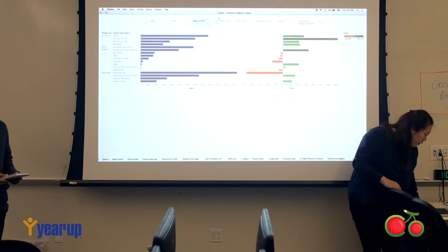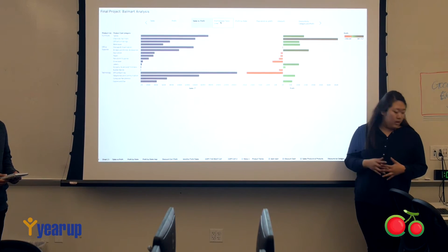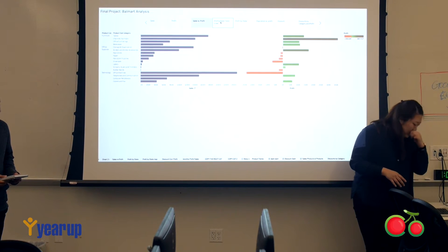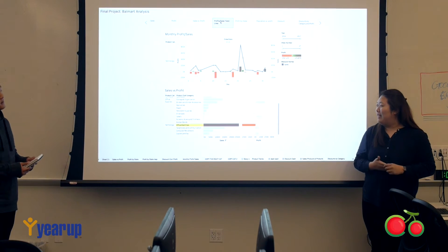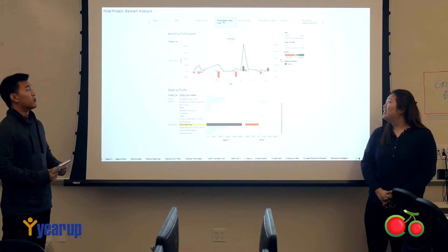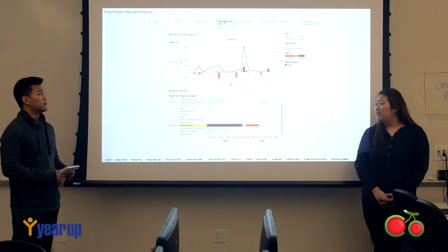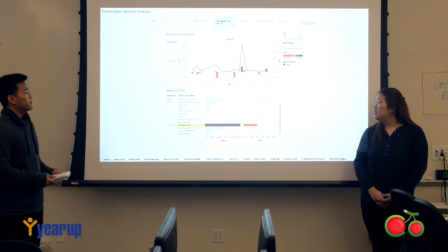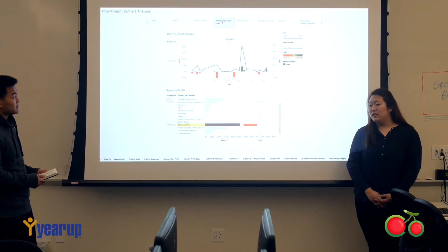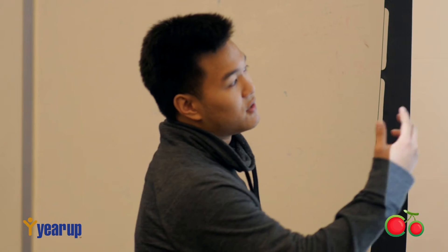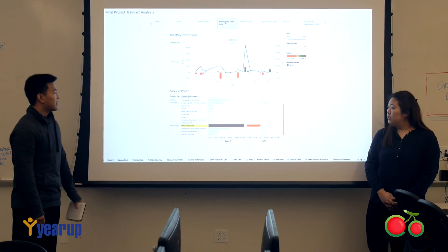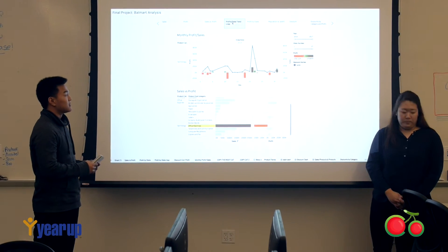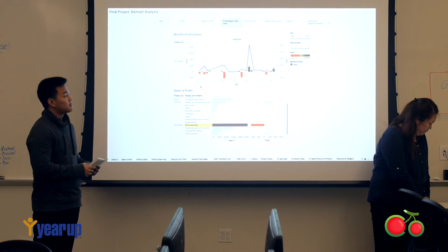To figure out why this is happening, we created some trend lines. From this trend, we wanted to research more on the outliers. We found five spikes or outliers. The first one, around the third day, there was a spike in sales but a decrease in profits.